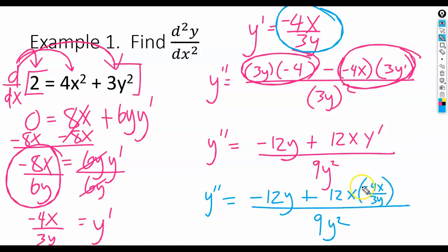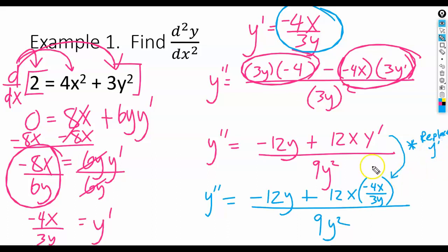That's a little weird. What you can do is draw an arrow and put a star there, and make a little note about replacing y'. That's the main step in this whole process that you probably wouldn't think to do — so keep that in mind. Now that we've done that, we get to simplify more. I'm going to rewrite that 12x as 12x over 1, and you'll see why — because this 3 can go into that 12 four times.